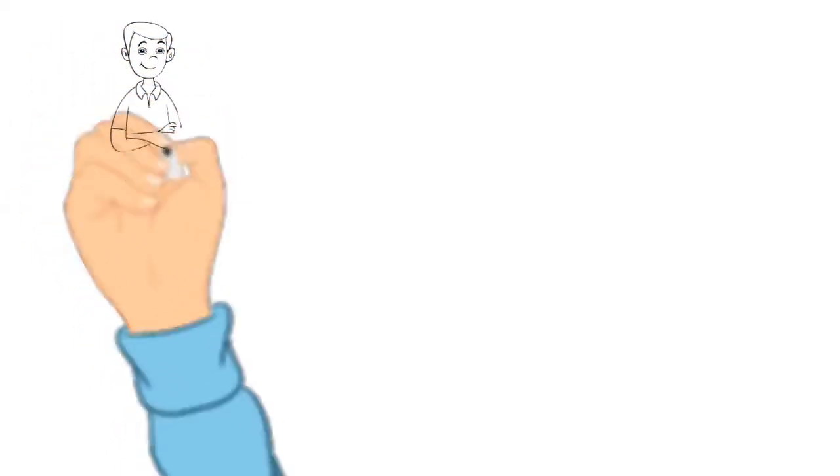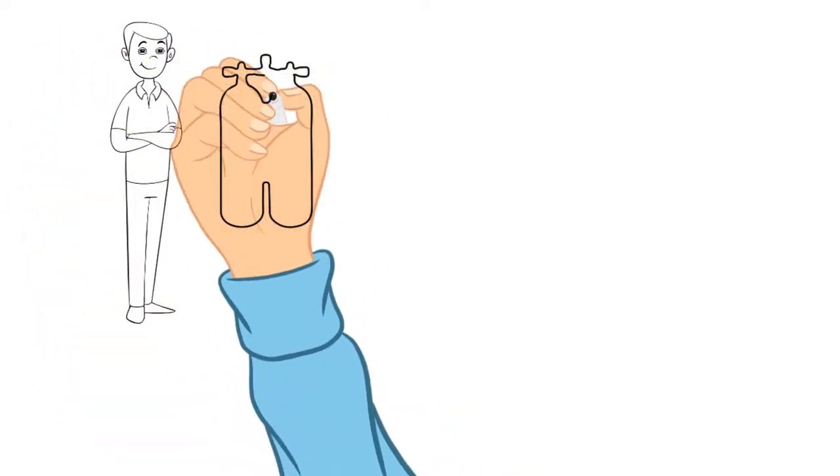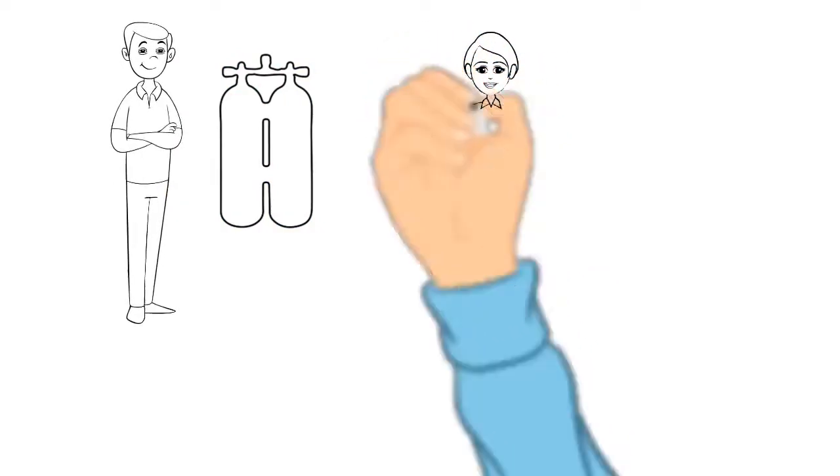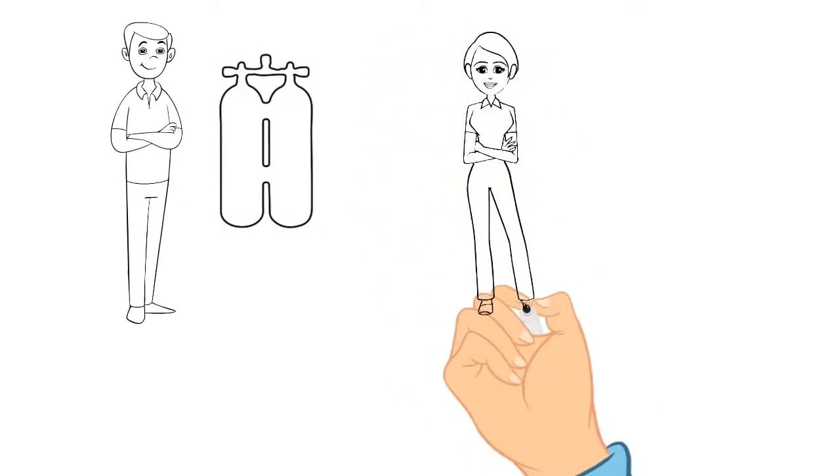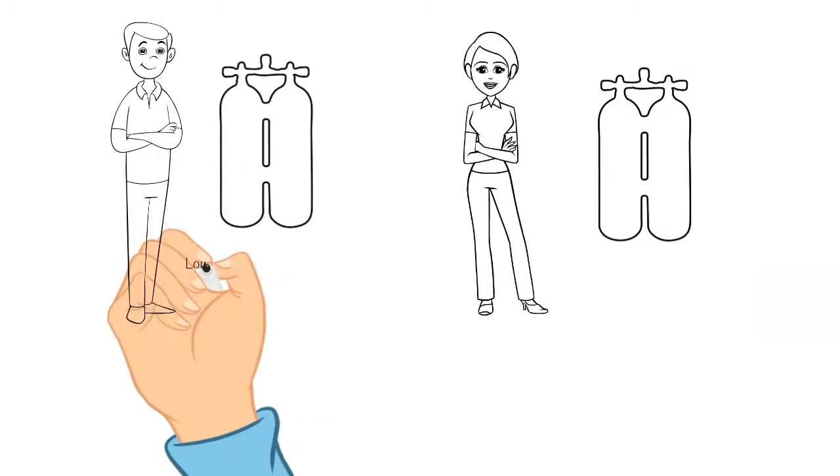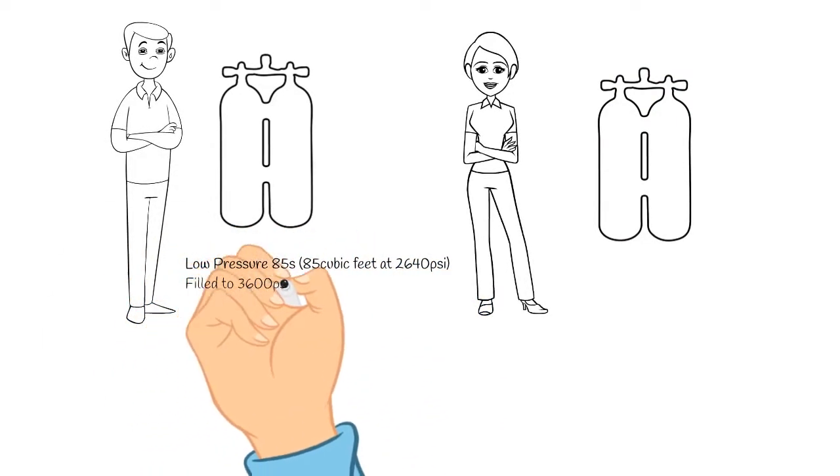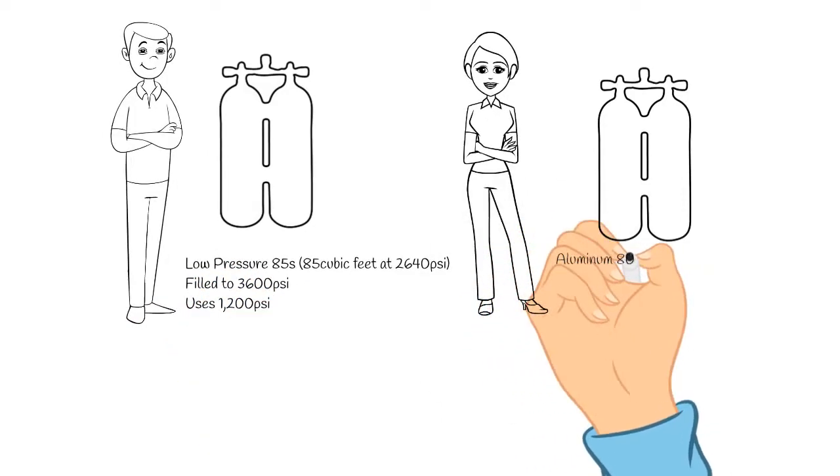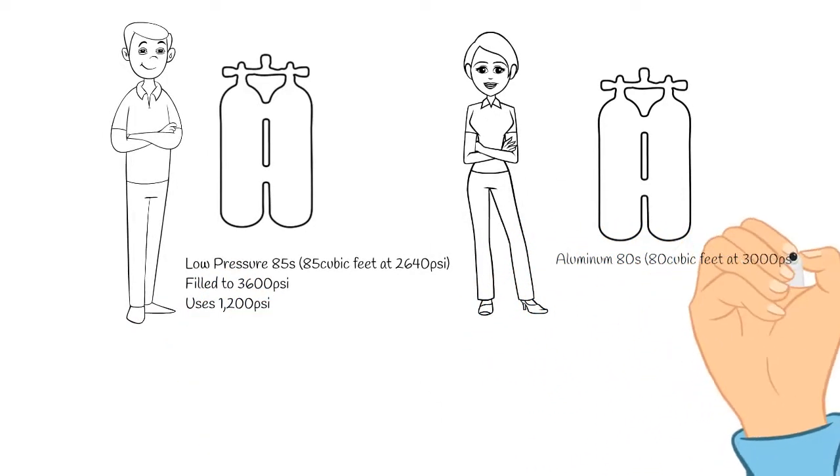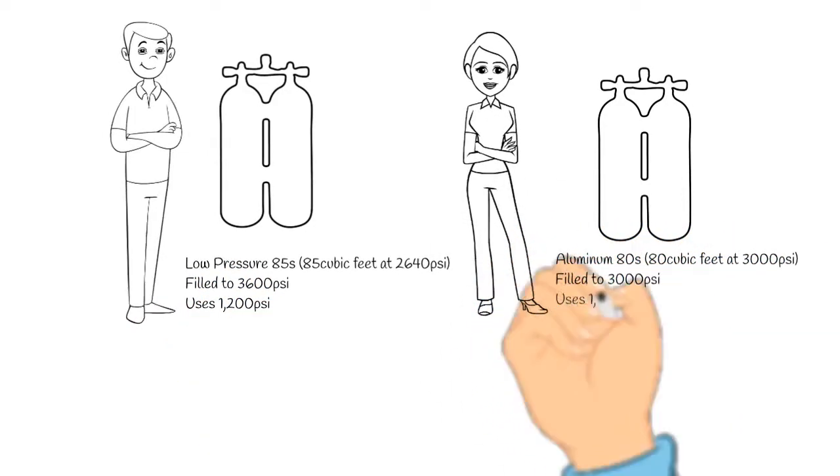Unfortunately, this breaks down a little bit as soon as we start using cylinders of different sizes. So if we have a buddy team here and one diver is using low pressure 85s, the other diver is using regular aluminum 80s, and they go to dive together and they both hit their turn pressure at the same time and they turn around at the same time.